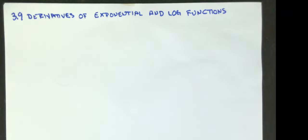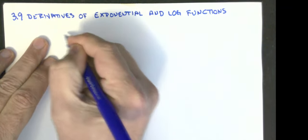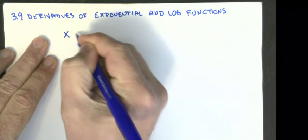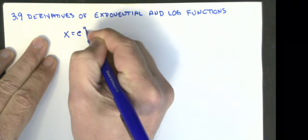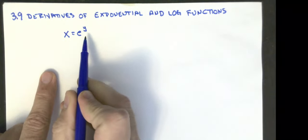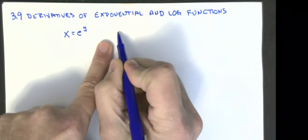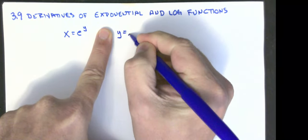We'll start out with our definition of a logarithm, where if I have x equals e to the y, that means y is equal to the natural log of x.